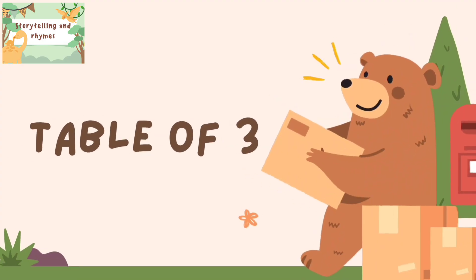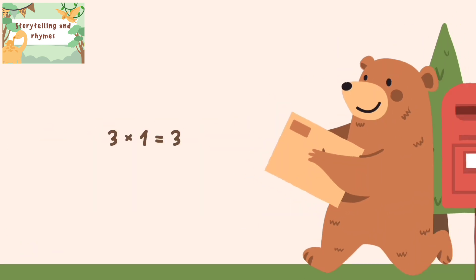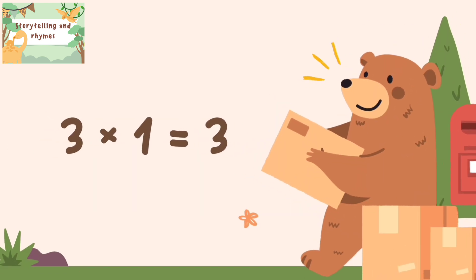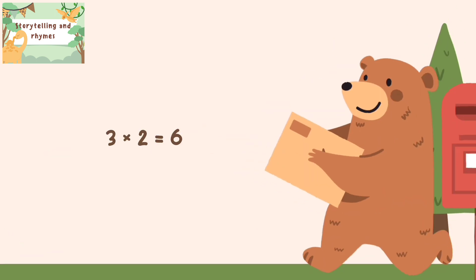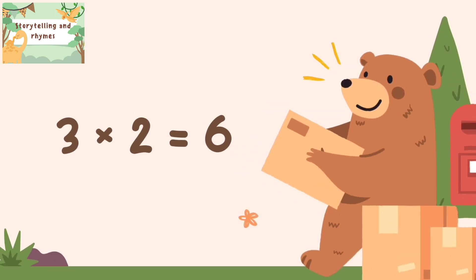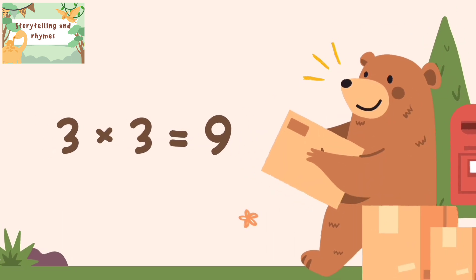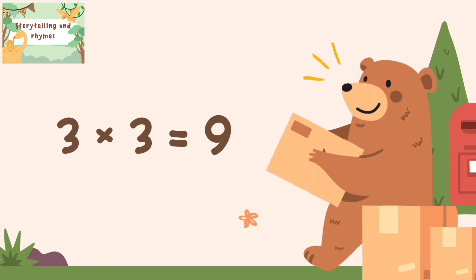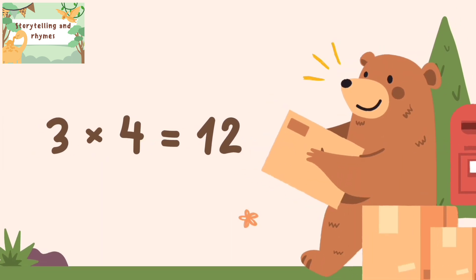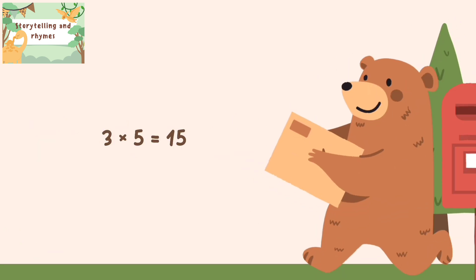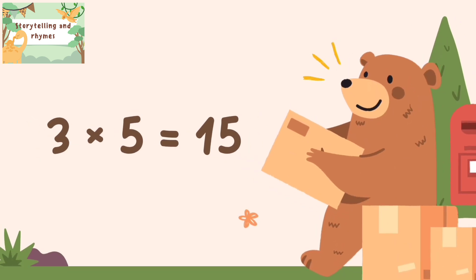Table of 3: 3 one's are 3, 3 two's are 6, 3 three's are 9, 3 four's are 12, 3 five's are 15.